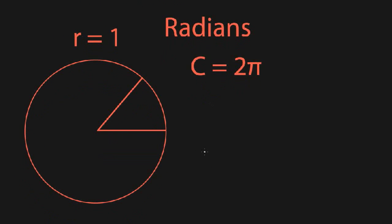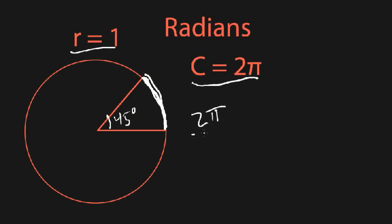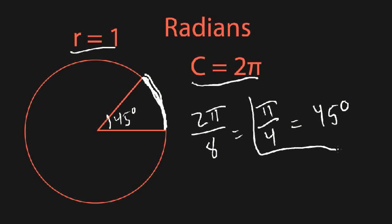Before looking at the graphs, let's talk about radians — another way of measuring angles. We use radians because you get some nice properties of cosine and sine that aren't true with degrees. For example, 45 degrees: in radians, you think about how much of the circle that angle describes. If the radius is one, the circumference is 2π, and 45 degrees is one-eighth of the circle. So the radian measure is one-eighth times 2π, which gives π over 4.